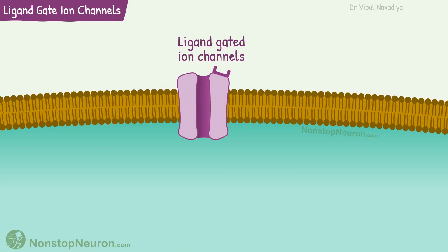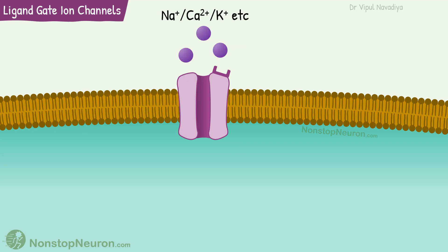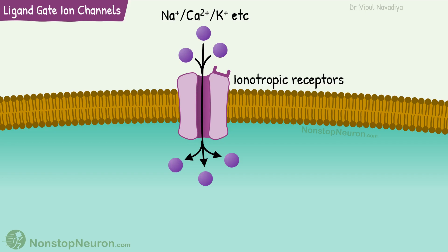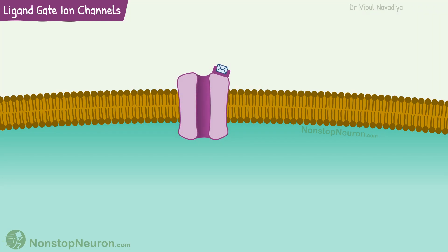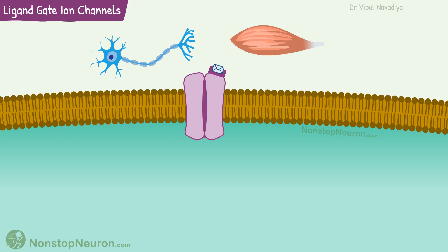First, ligand-gated ion channels. They are basically ion channels that allow the passage of small ions like sodium, calcium, potassium, etc. A receptor is just a part of the channel, so the same molecule works as both a channel and a receptor. They are also called ionotropic receptors. The binding of a ligand opens or closes the channel. They are involved in signaling between electrically excitable cells like neurons and muscle cells. For example, acetylcholine receptors found on the motor end plate are sodium channels.